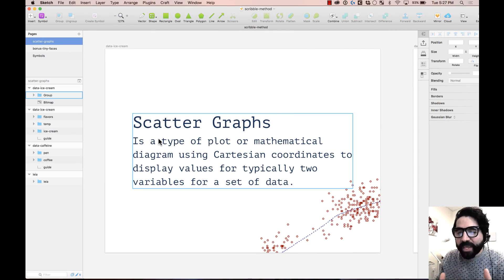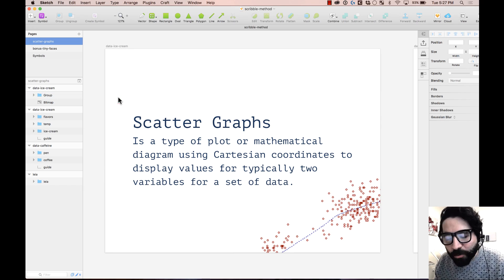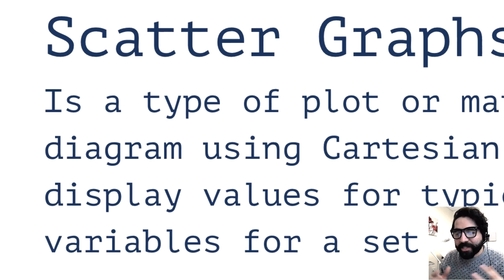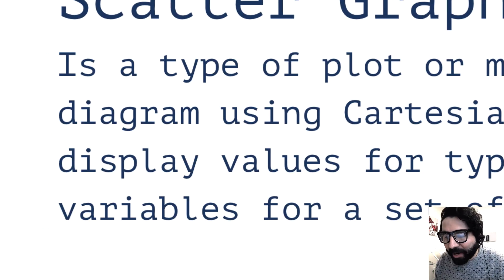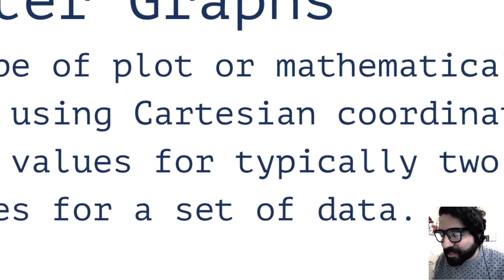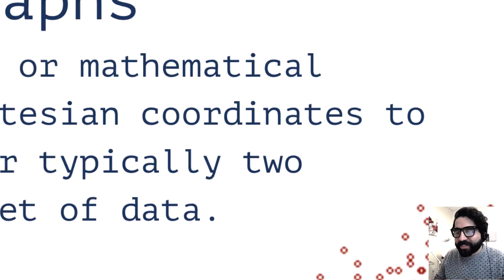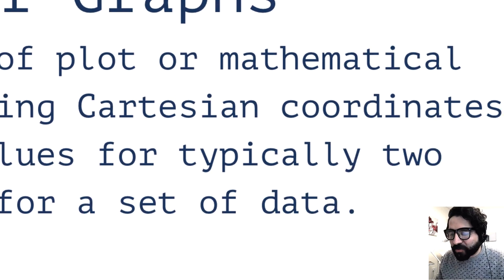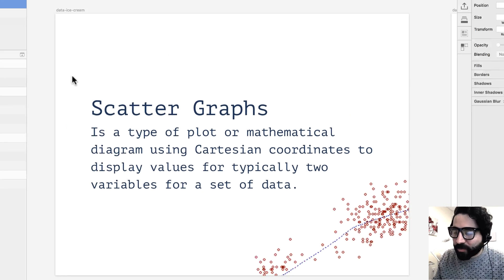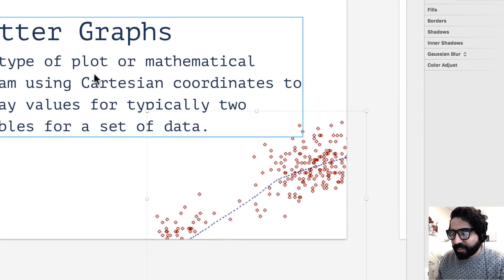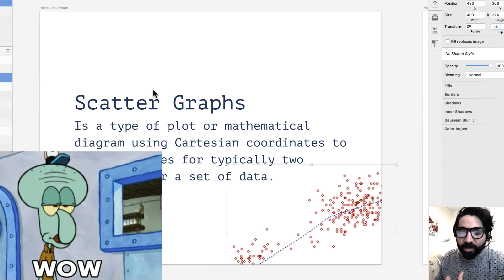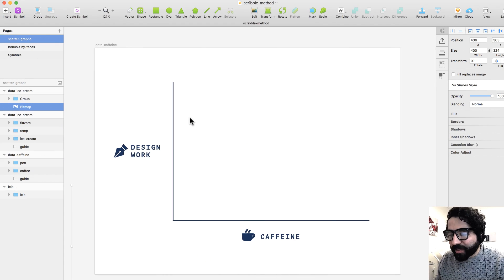So this trick is to make scatter graphs. If you don't know what those are, it's a type of plot or mathematical diagram using Cartesian coordinates to display values. At the end, it looks something like this. So let's get to it.